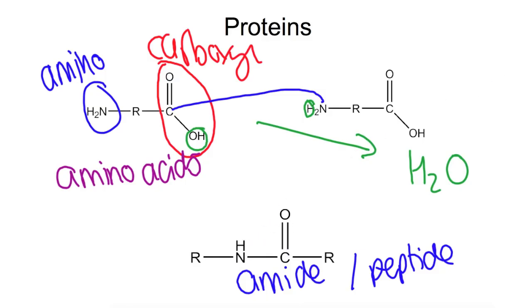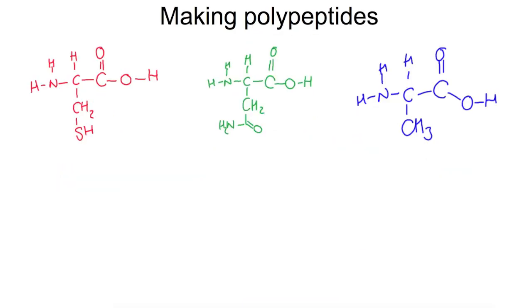We're going to have a look now at forming proteins. So we can look at making polypeptides. Polypeptides are those where we don't have a full protein structure, we just have a small part of a protein structure. Here we're going to make a tripeptide because we have three amino acids that we're going to join together to form our tripeptide.